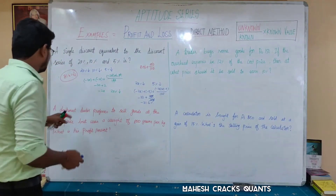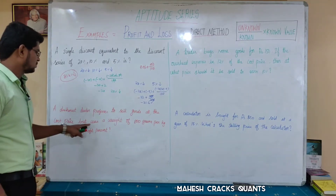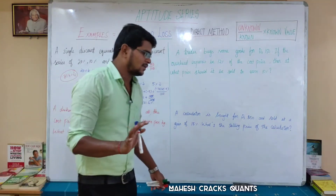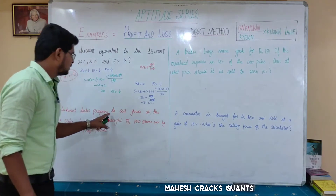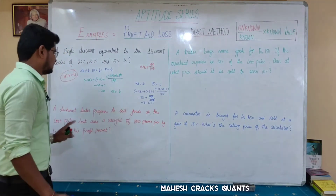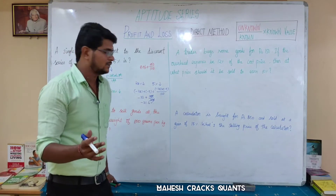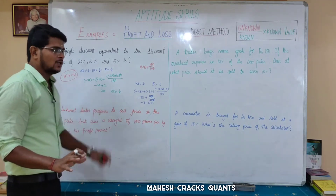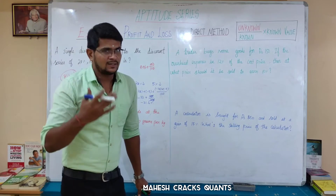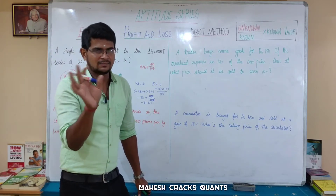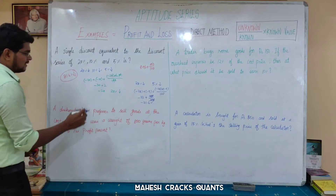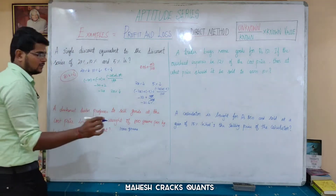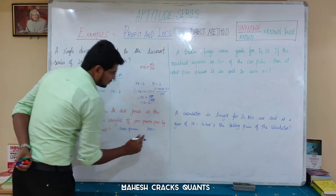Next problem: a dishonest dealer proffers to sell goods at the cost price but uses a weight of 800 grams per kilogram. What is his profit percentage? One kilogram is 1000 grams, but the dealer gives only 800 grams while charging for 1000 grams.